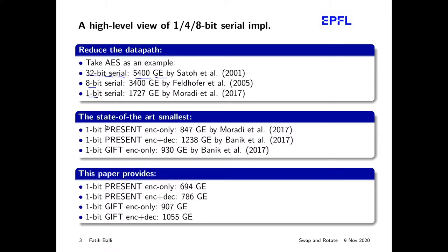Before this work, the state-of-the-art smallest implementations for these block ciphers were: for the 1-bit PRESENT implementation (encryption only), by Morady in 2017; for the combined PRESENT implementation, by Banig; and also an encryption-only GIFT circuit by Banig. In comparison, our paper provides much smaller implementations — both encryption-only and encryption-decryption circuits for both ciphers. Most impressively, the 1-bit encryption-only PRESENT implementation is smaller than 700 gate equivalents.